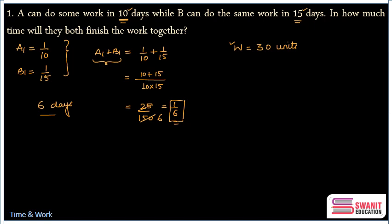According to the question, A can finish this work in 10 days. That means in one day, A will finish 30 upon 10, that is 3 units of work. In the same way, B can finish this work in 15 days. And therefore, B's one day work will be 30 divided by 15, that is 2 units.